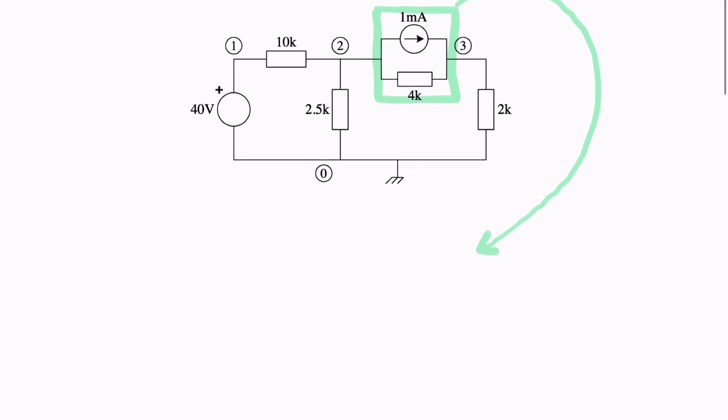If you want to convert that to a voltage source, it would look something like this, where we have an EMF in series with a resistor. The resistor would be the same, 4K, and the EMF would be the current multiplied by that resistance. So it would be 1 milliampere multiplied by 4 kilo ohms, that's 4 volts.